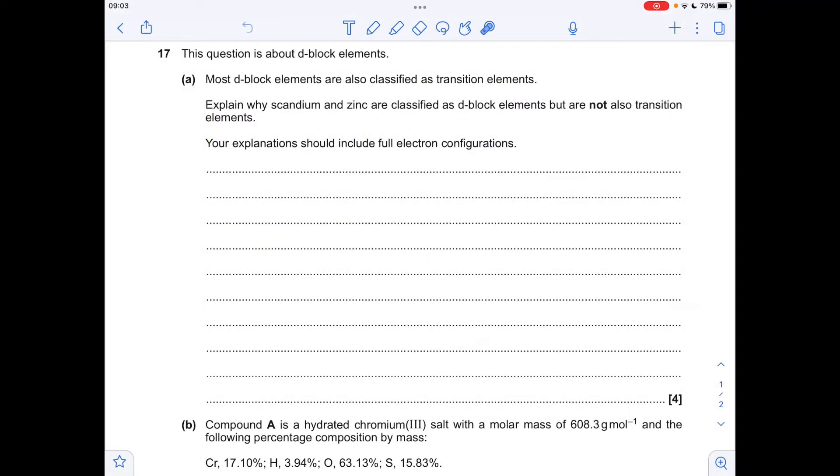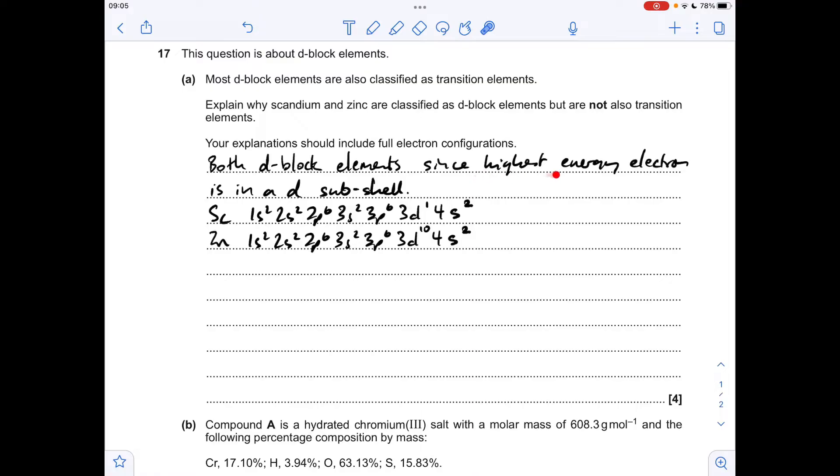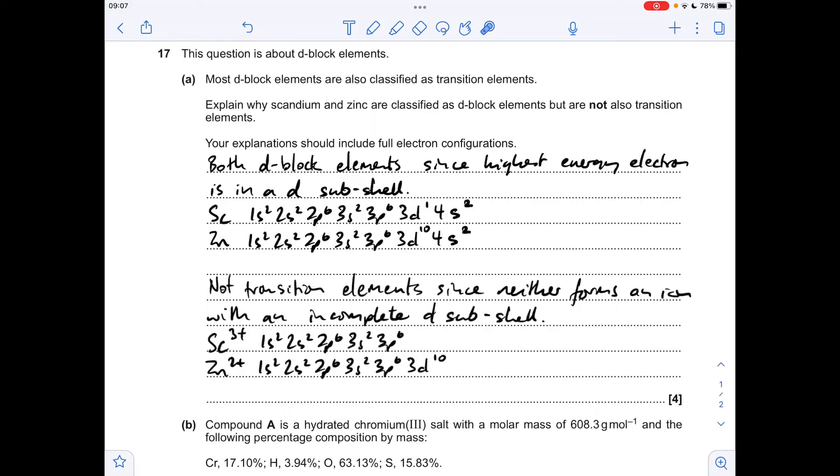Okay, so we'll make a start. We'll begin by saying why scandium and zinc are classed as d-block elements. That's because the highest energy electron is in a d-sub-shell, and there's the full electron configuration for both of them. So why are neither of them classed as transition elements? That's because neither of them form an ion with an incomplete d-sub-shell. To be classed as a transition element, it's got to be able to form an ion with an incomplete d-sub-shell. Scandium only forms a 3-plus ion, so it doesn't even have any d-electrons. Zinc only forms a Zn-2-plus ion, and that's got a complete d-sub-shell.